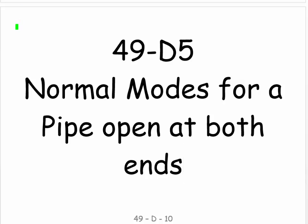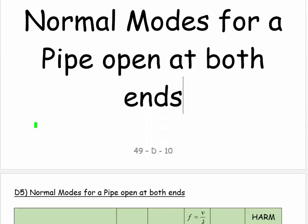Welcome. This is 49D5 and the title here is Normal Modes for a Pipe that is open at both ends. So this would be like a flute for example.